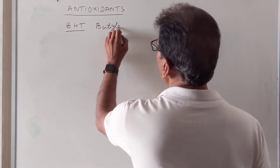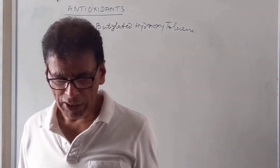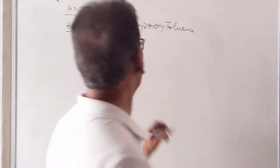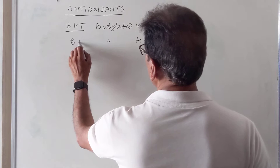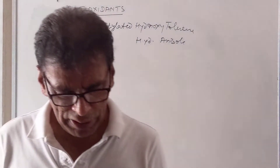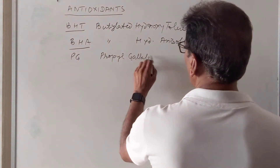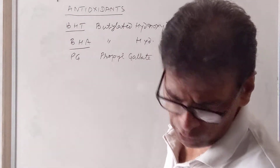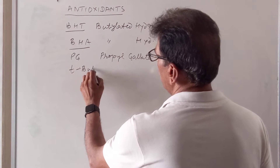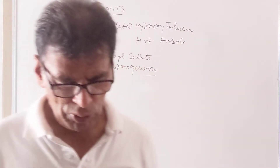Common antioxidants include BHT, which stands for Butylated Hydroxytoluene, and BHA, which stands for Butylated Hydroxyanisole. We also have Propyl Gallate (PG), which is a derivative of gallic acid.